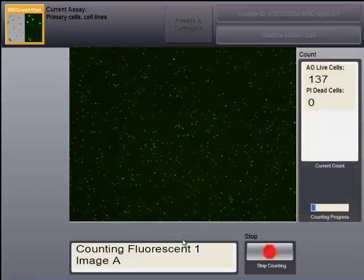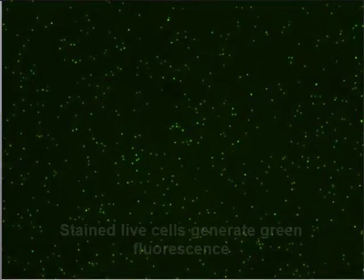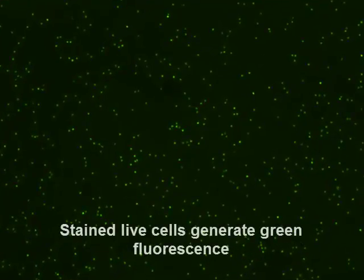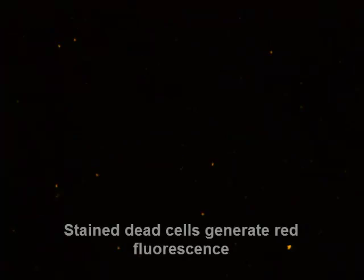Acridine orange is a nuclear staining dye that stains all live nucleated cells, generating green fluorescence that is easily distinguishable from debris and unwanted cell types. Propidium iodide enters dead cells with compromised membranes, generating red fluorescence.